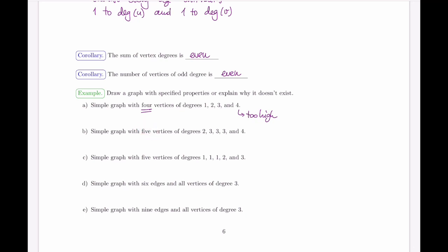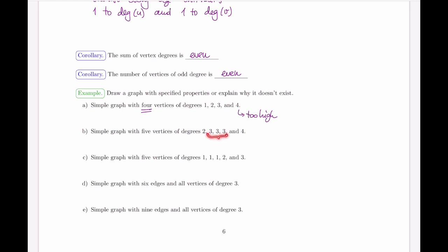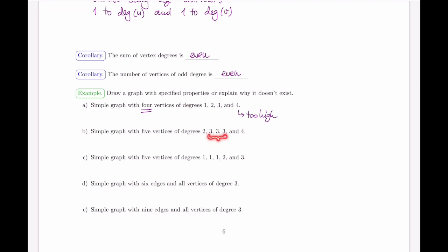A simple graph with five vertices and degrees 2, 3, 3, 3, 4 doesn't exist either. The sum of degrees is 2+3+3+3+4 = 15, which is odd — contradicting the handshake theorem. Equivalently, the number of odd-degree vertices is 3 (the three vertices of degree 3), which is odd — also a contradiction.